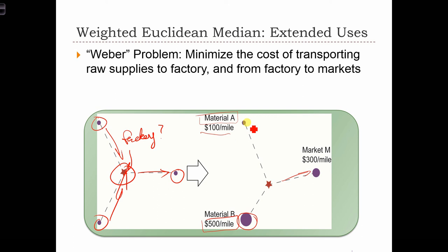In this case, we would intuitively think that we would want our factory to be located somewhat closer to the source of material B, and we don't mind if it's somewhere farther away from the source of material A. Because of the relatively high cost of $300 per mile, we still want the factory somewhat close to the market. If we input these costs as weights into our weighted Euclidean median problem, we could find the optimal location to put a factory and solve the Weber problem.